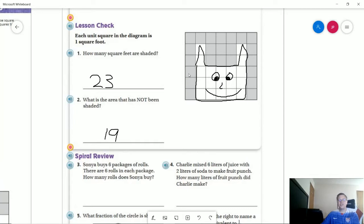So we have 1, 2, 3, 4, 5, 6, 7, 8, 9, 10, 11, 12, 13, 14, 15, 16, 17, 18, 19, 20, 21, 22, 23 square feet for the amount shaded in.